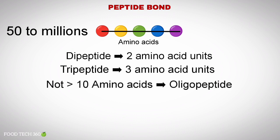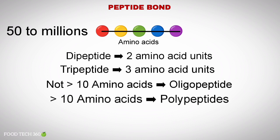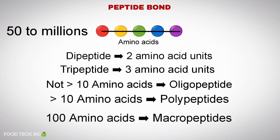If a peptide is made up of not more than 10 amino acids, then it is called an oligopeptide. Beyond that, it is a polypeptide. Polypeptides, when they are made up of over 100 amino acids, are sometimes called macropeptides.